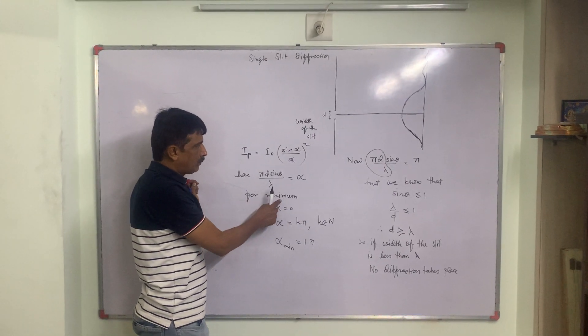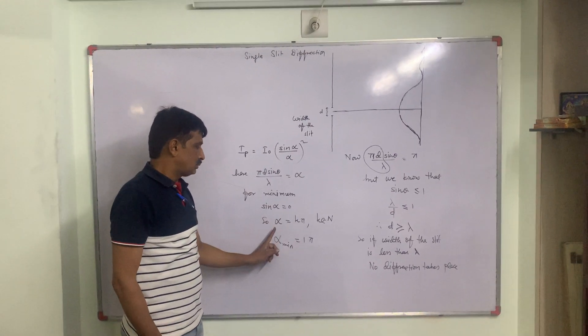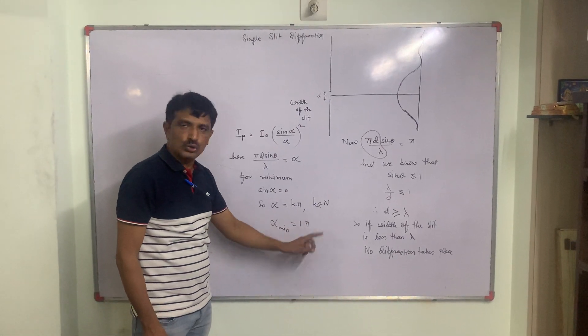So for minimum, which term should be zero? sin alpha is zero. That is, alpha should be k pi where k belongs to n.